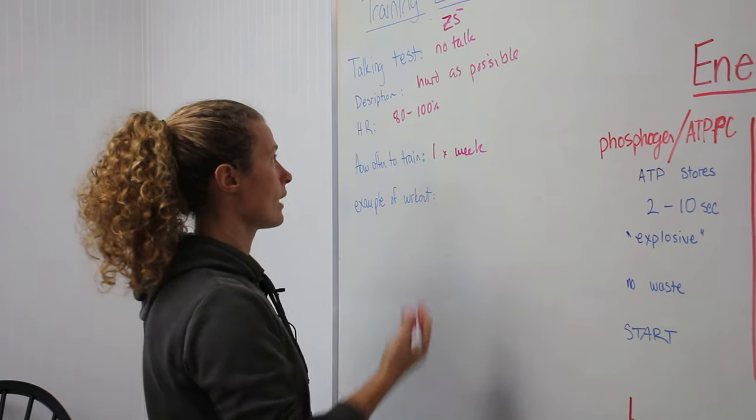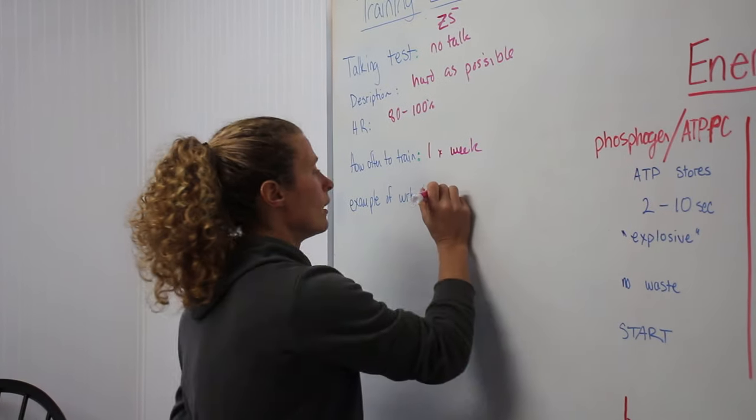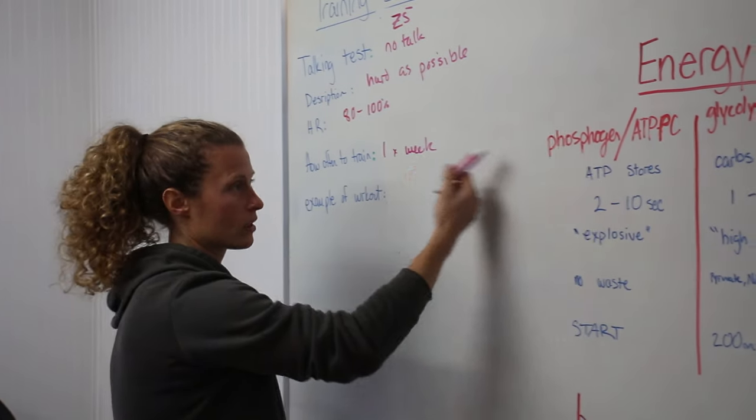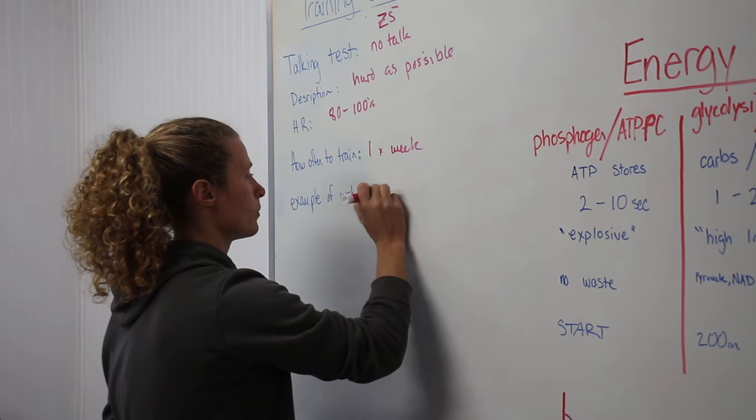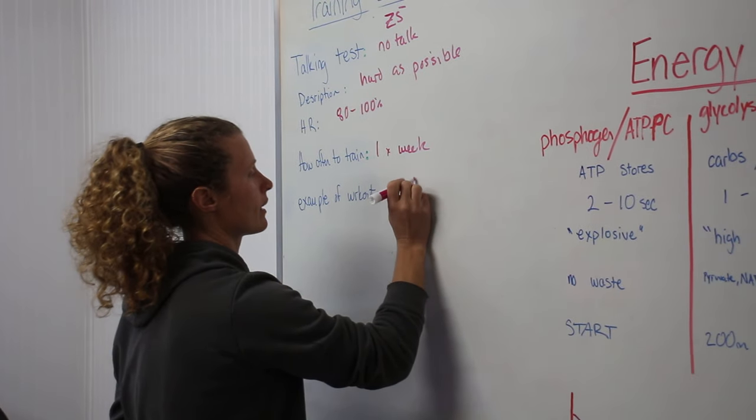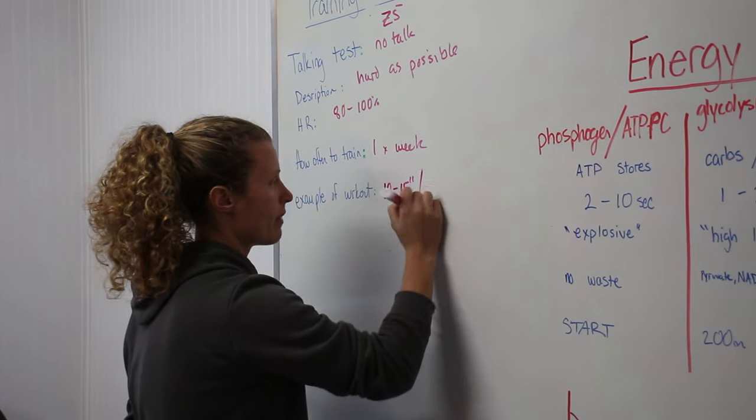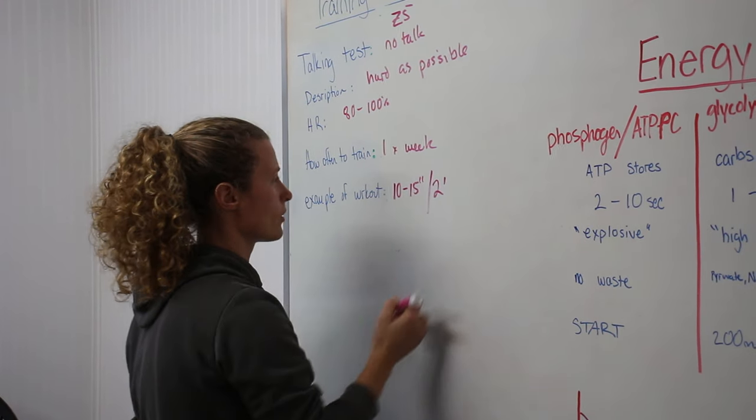An example of this kind of workout is going to be tapping into this system, your phosphagen system. This is going to be 10 to 15 seconds as hard as you can. And then to recover that two minutes of rest.